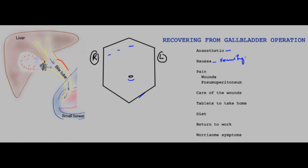The three pain sites are: the incision sites themselves, the area where the gallbladder used to live — which may cause some pain deep within the liver — and the gas inside the abdomen, which feels like trapped wind. This gas can irritate the diaphragm and give rise to referred pain in the shoulders.